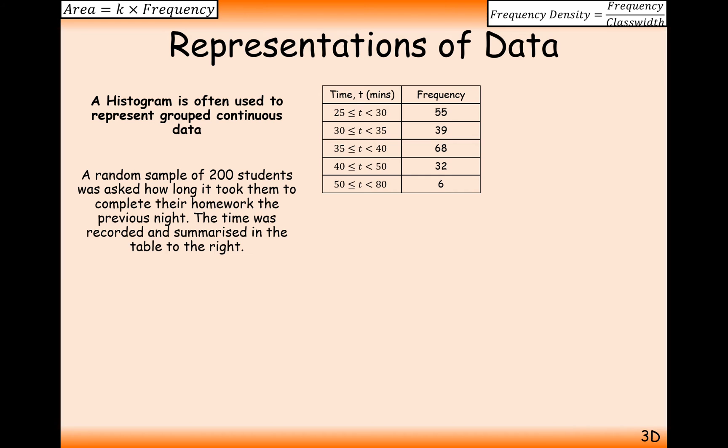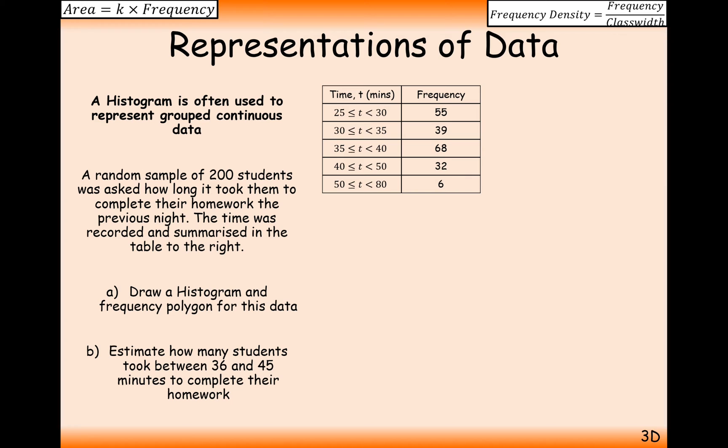All right then, so let's have a look at a question. A random sample of 200 students were asked how long it took them to complete their homework the previous night. The time was recorded and summarized in the table to the right. So there were 55 people who took between 25 and 30 minutes. Draw a histogram and a frequency polygon for this data. Part B is estimate how many students took between 36 and 45 minutes to complete their homework. So what we need first is a little bit of frequency density going on.